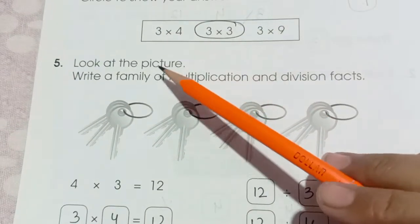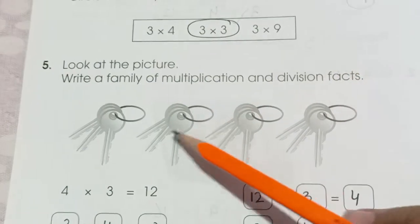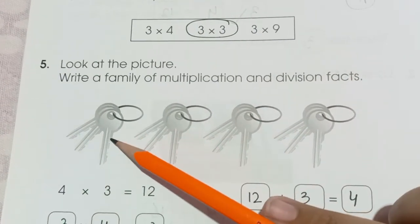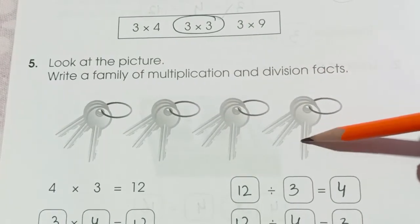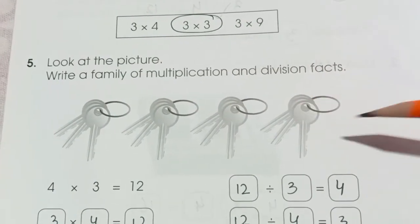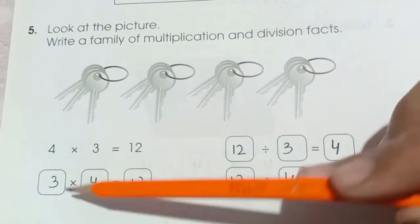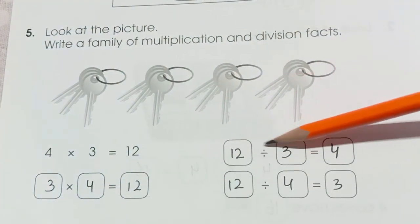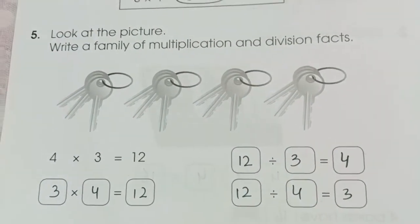Look at the picture. Write a family of multiplication and division. Here in this picture we have 1, 2, 3, 4 keys and we have 1, 2, 3, 3 keys in each bunch. So we have 4 times 3 is 12, 3 times 4 is 12, 12 divided by 3 is 4, and 12 divided by 4 is 3.